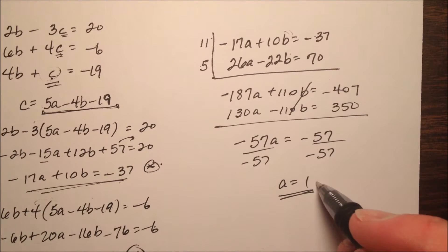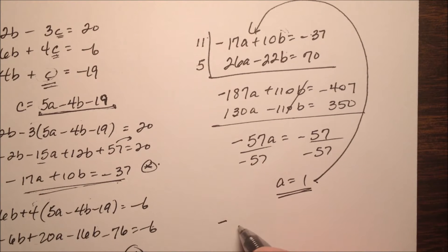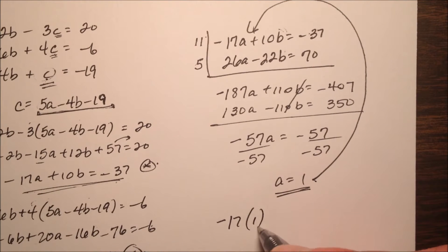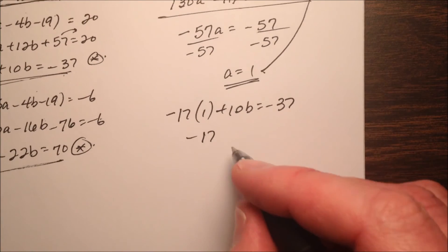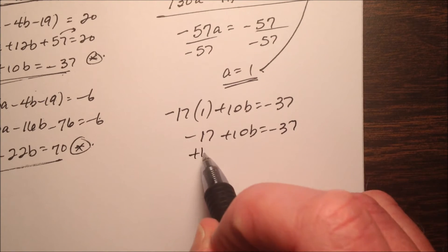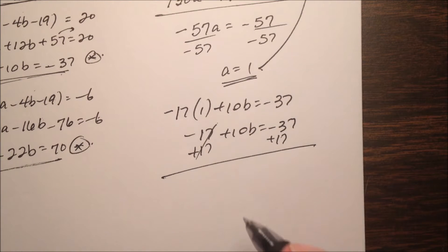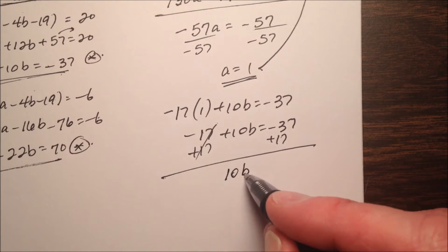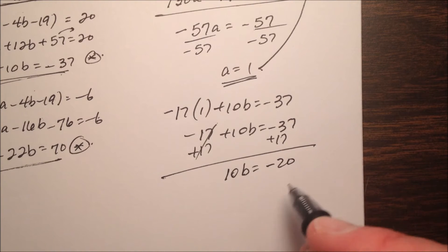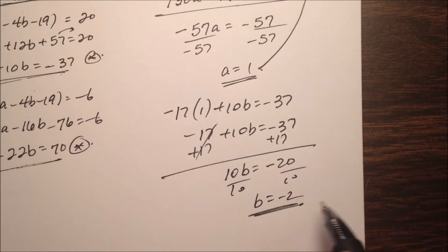Well, if my value of a is 1, let's go ahead and dump this back up here. So I have a negative 17a, where a is 1, plus 10b equals negative 37. I'm going to add 17 to both sides, and that would eliminate that constant there. So 10b will equal a negative 20, so when I divide by 10, b will equal negative 2.